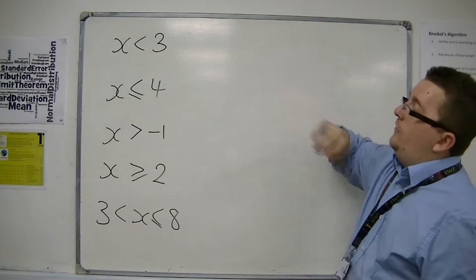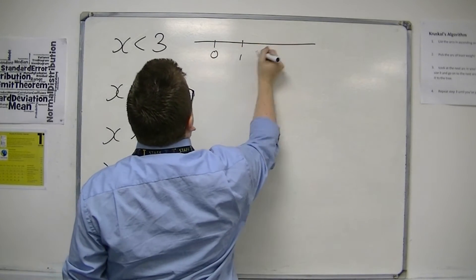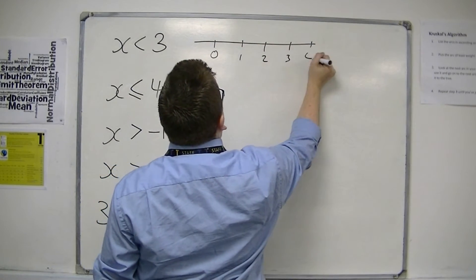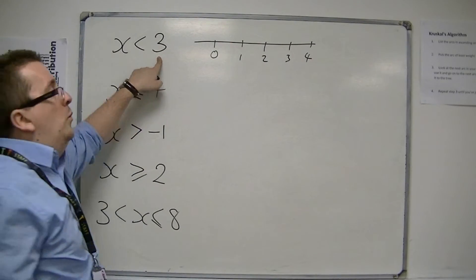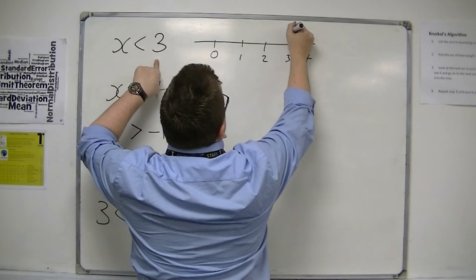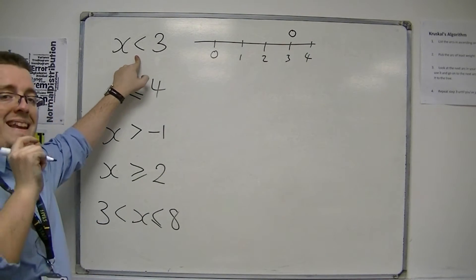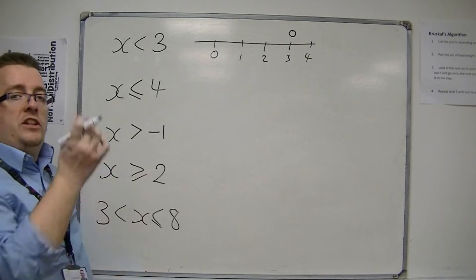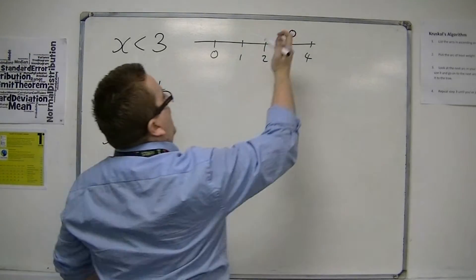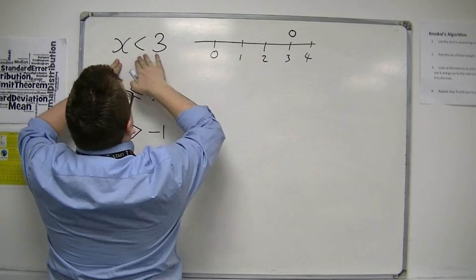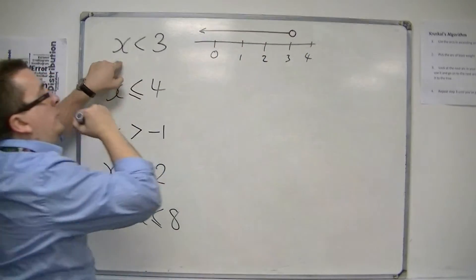So x is less than 3. Let's draw ourselves a number line: 0, 1, 2, 3, 4. At 3 we're going to represent it using a dot. But because we want to be strictly less than 3, we're going to use a hollow dot rather than a filled-in dot. And because we want any x that is less than 3, we are pointing our arrow towards the left.